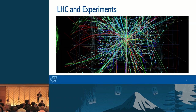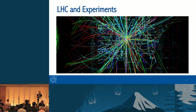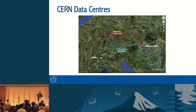With those pictures we can have a representation of all the collision events. The analysis gives scientists clues about how particles interact and about the fundamental laws of nature. To process all this data and support the research of scientists around the world, CERN has two data centers — one in Geneva, the other 22 milliseconds away in Budapest — and we are now running OpenStack in both of them.